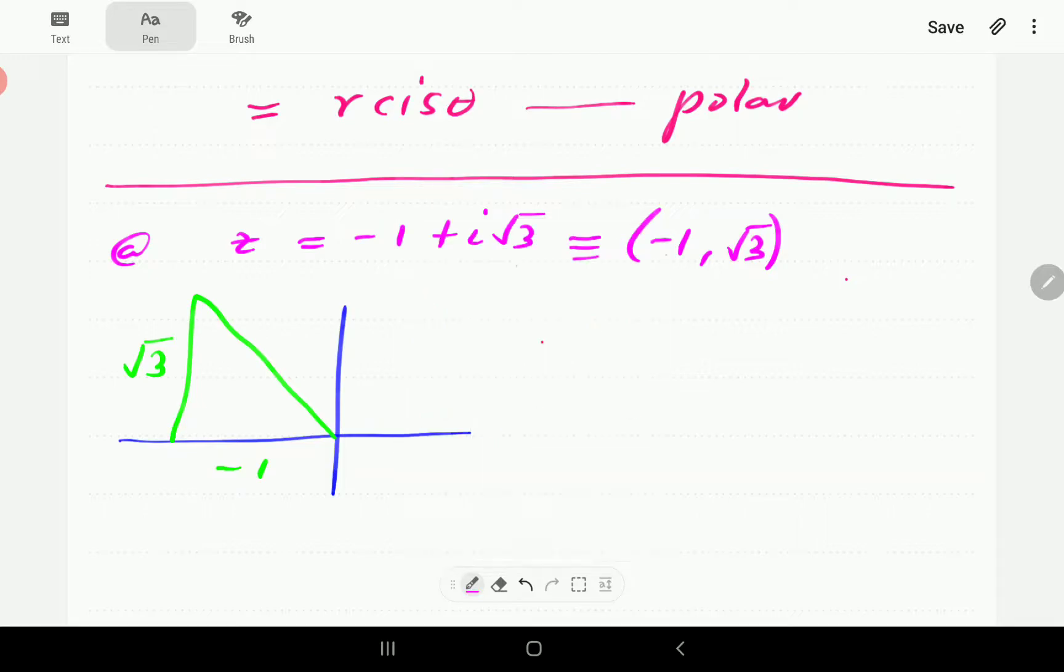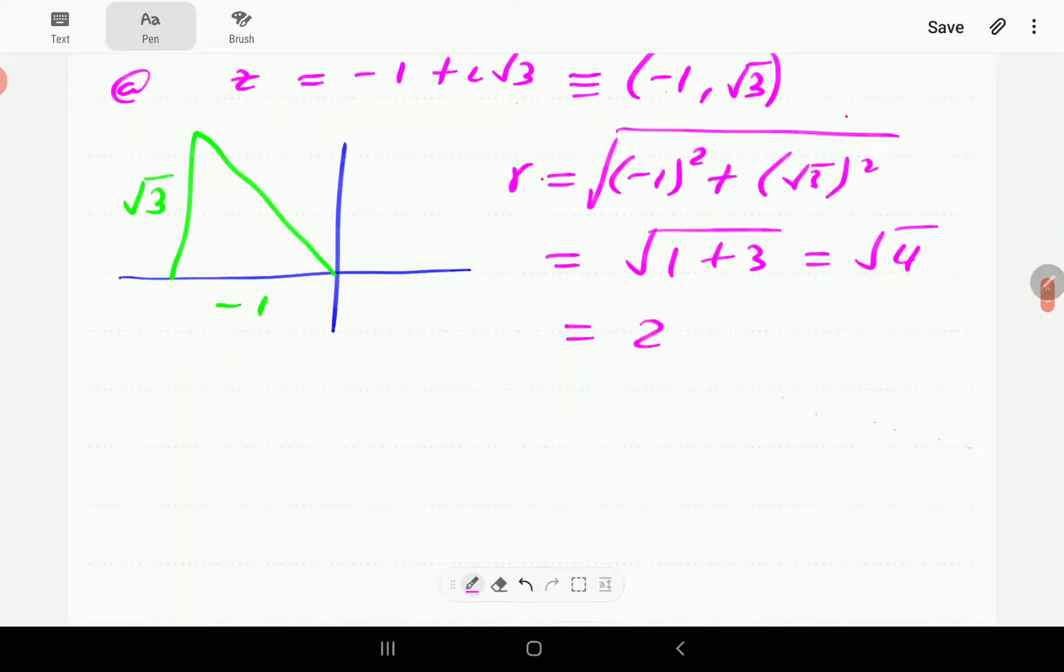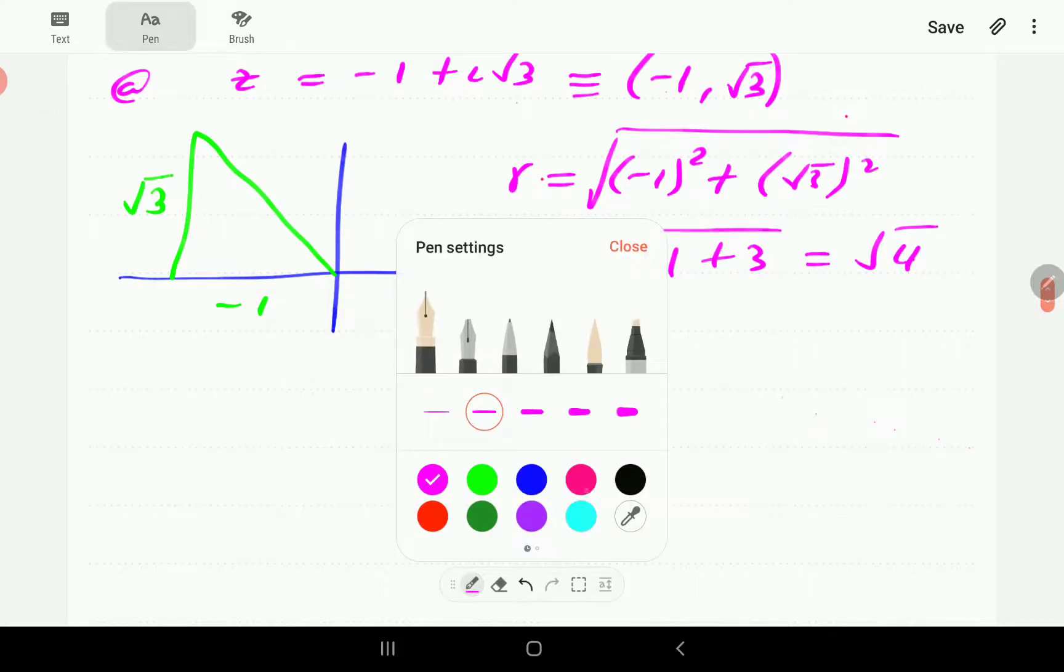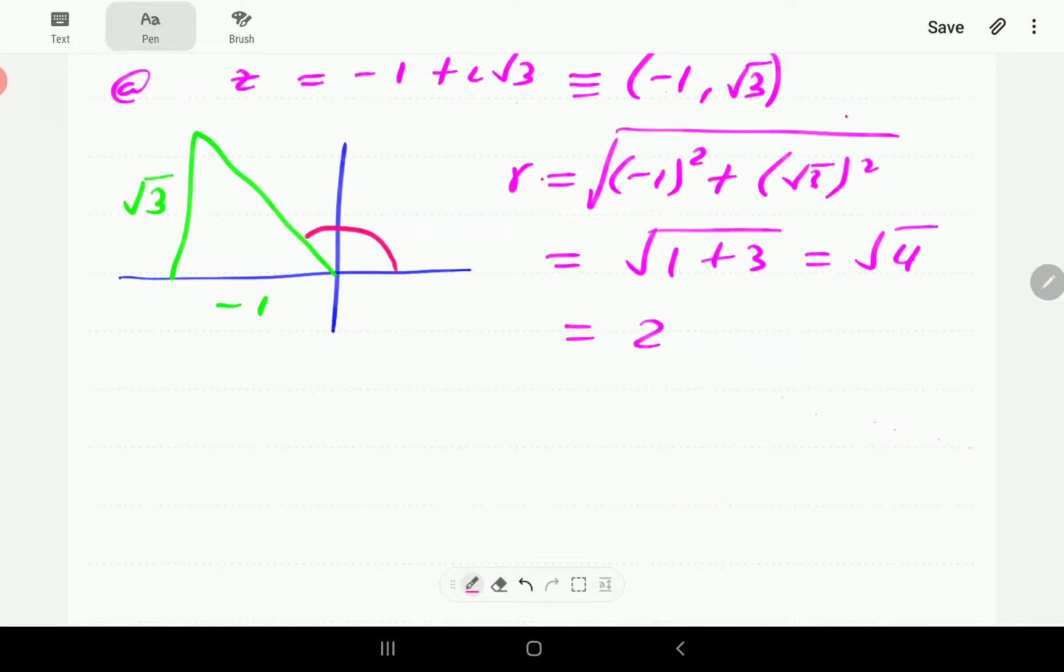So from that, we can find, using Pythagoras, we can find r, which is the modulus. So it's going to be the square root of negative 1 squared, plus root 3 squared. So negative 1 squared is 1. This is going to be 3. So this is going to be square root 4. So the modulus of this is 2. Then the angle theta is this angle here.